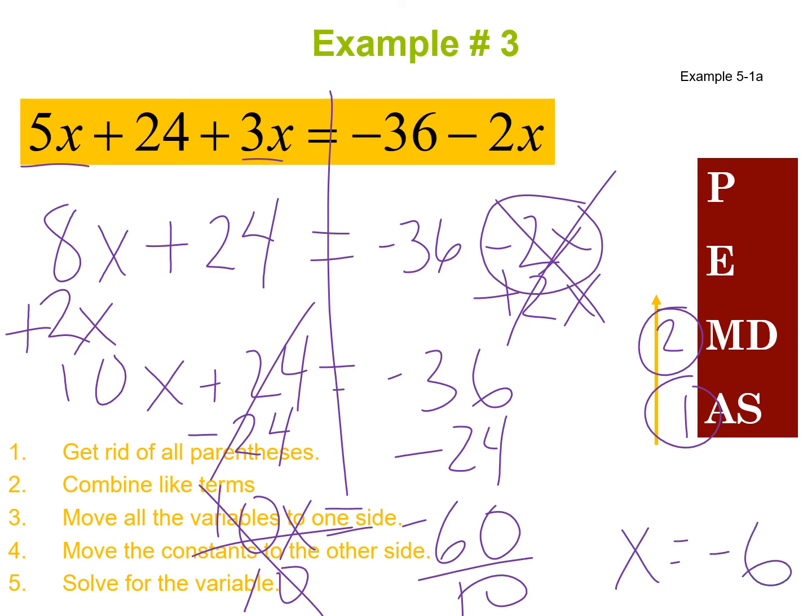Negative 60 divided by positive 10 is negative 6. If any of that was too fast, go back and watch the video. Make sure you have those examples copied in your notes and submit a picture through Canvas to your teacher. You'll be practicing more in class — make sure you ask for help. Hopefully this is a good review of inverse operations and like terms, and we'll continue practicing together.